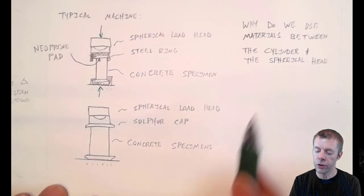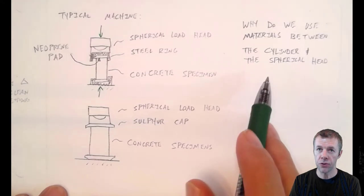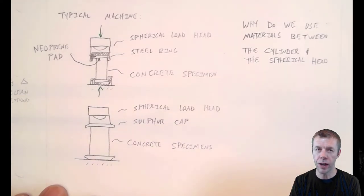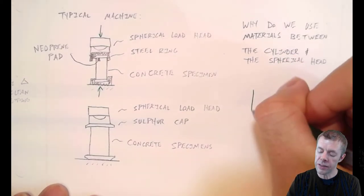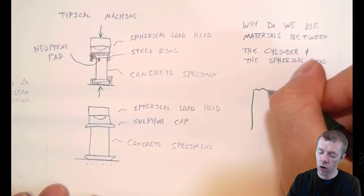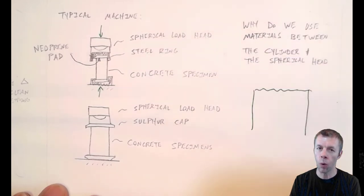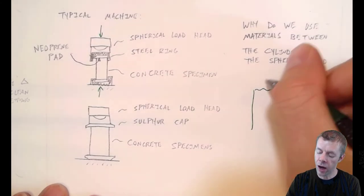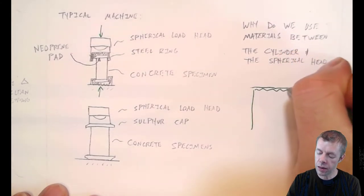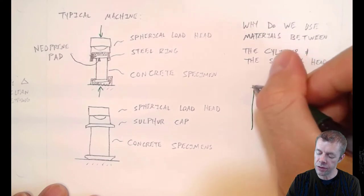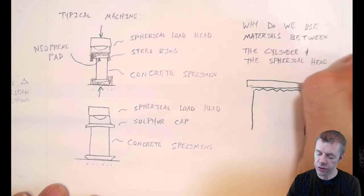I asked this question over here, why do we use materials between the cylinder, the concrete cylinder and the spherical head? Why don't we just put it exactly in there? Well, the reason why is if you zoom in on the surface of the concrete, even though you try to make it super flat, it won't be. It's going to be off a little bit.